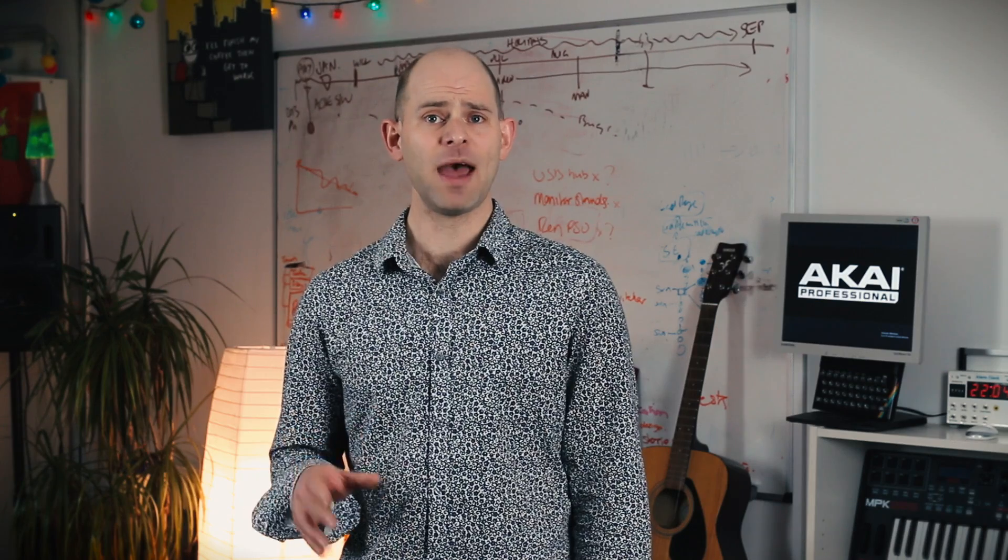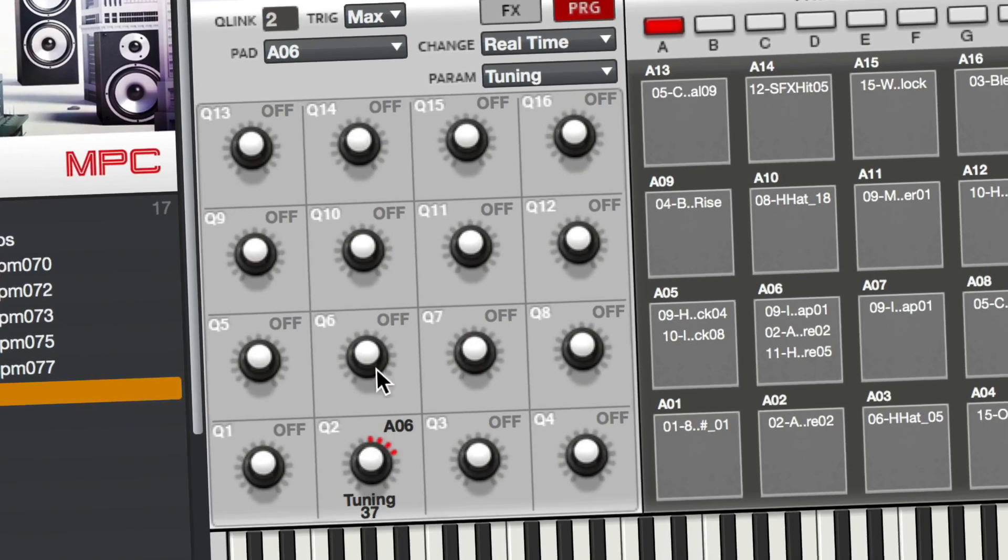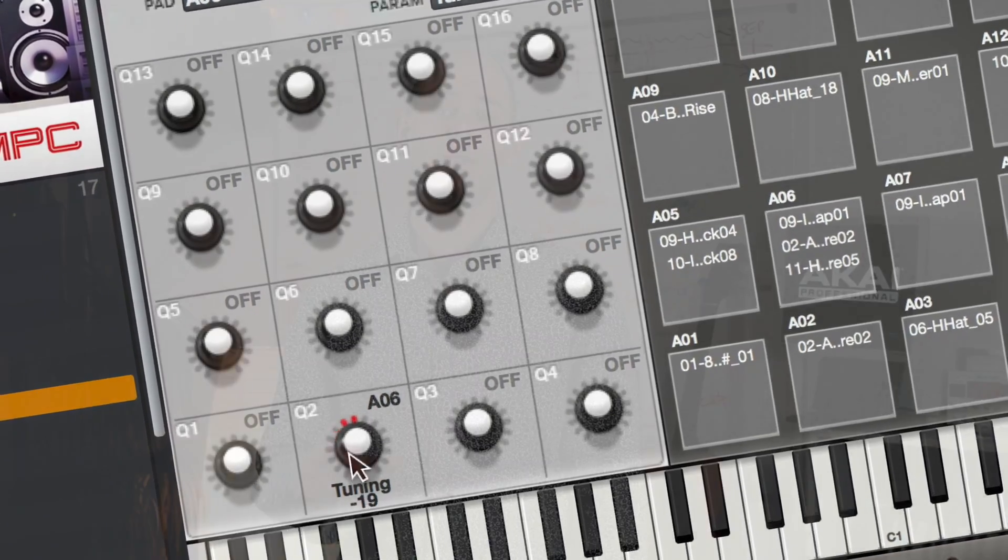In 1.7.2, we've streamlined the way you can assign Q-Links in main mode. Now you can simply drag a pad from the pad panel straight onto a Q-Link knob in the GUI. The Q-Link will be automatically assigned to that pad and given a sensible default mapping.